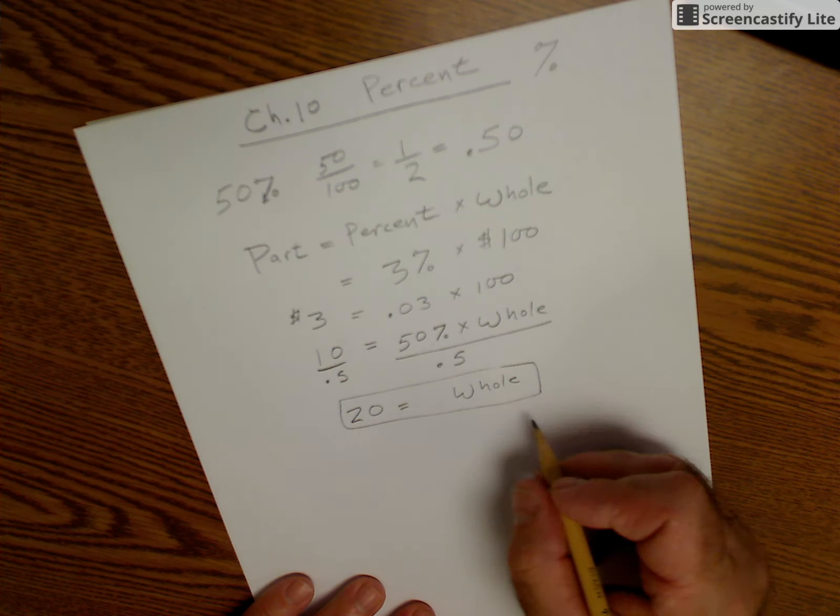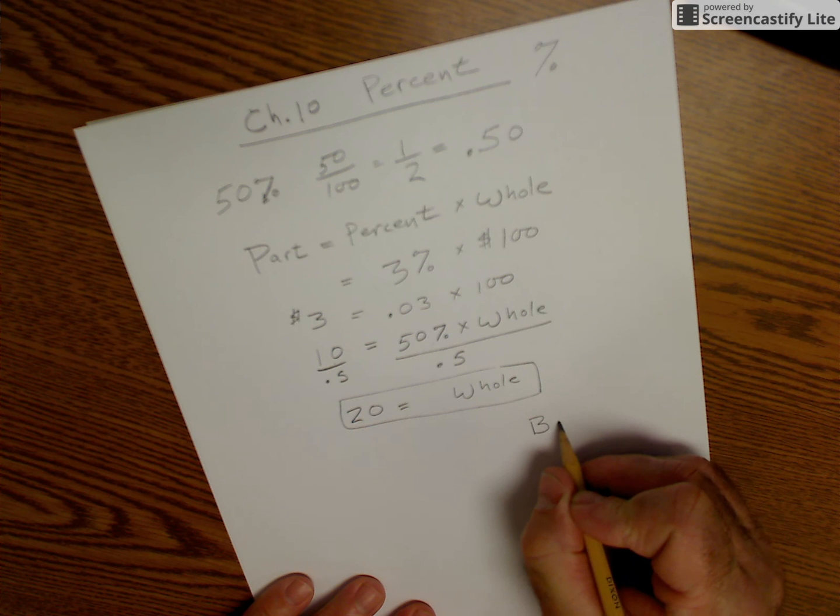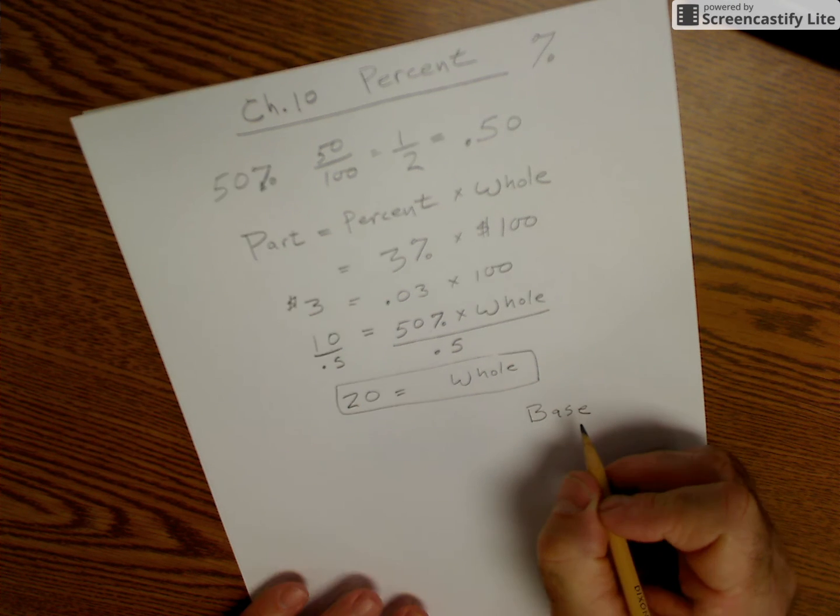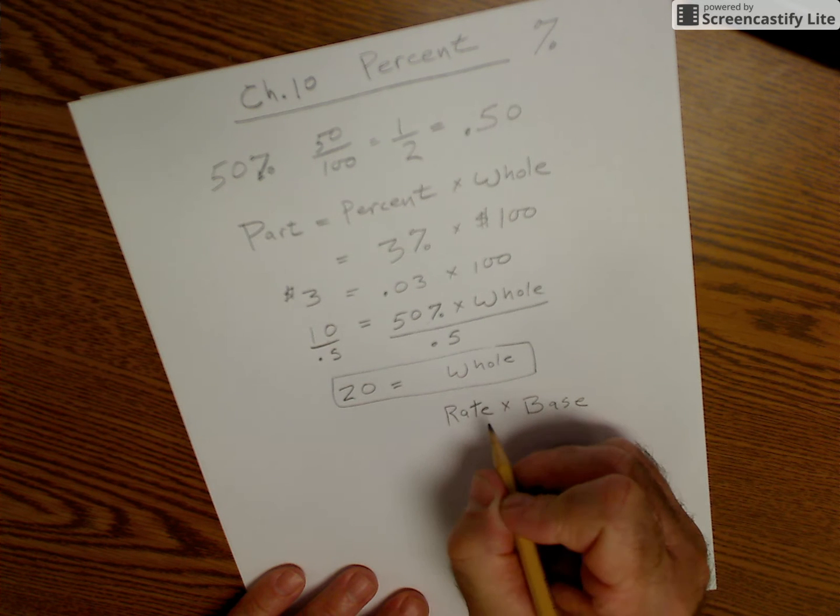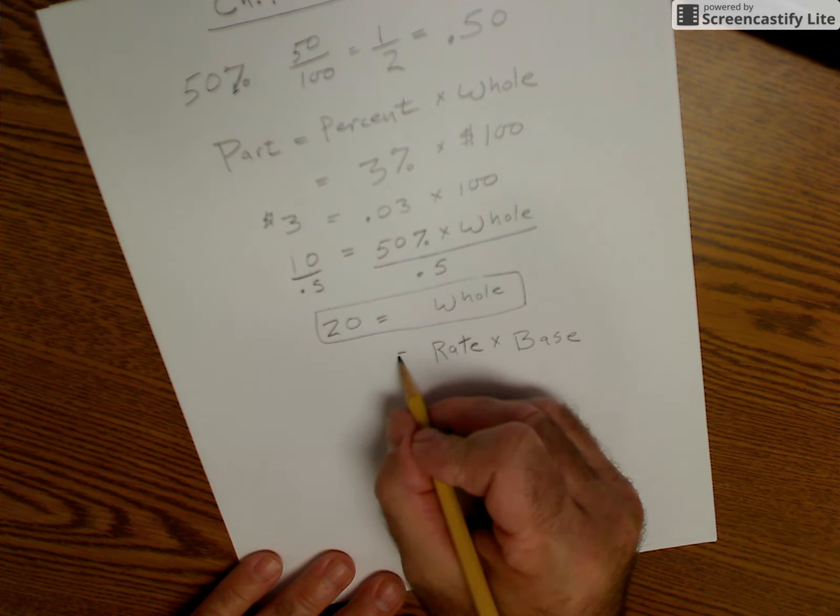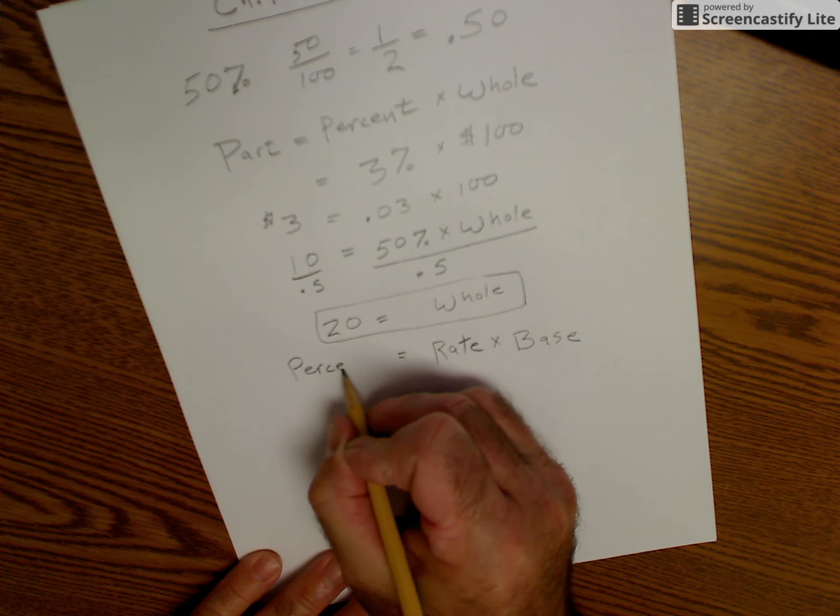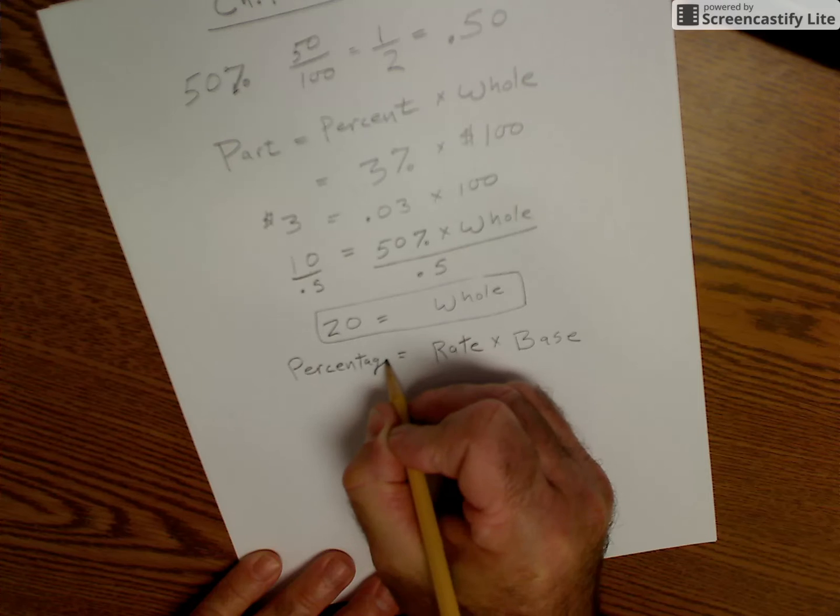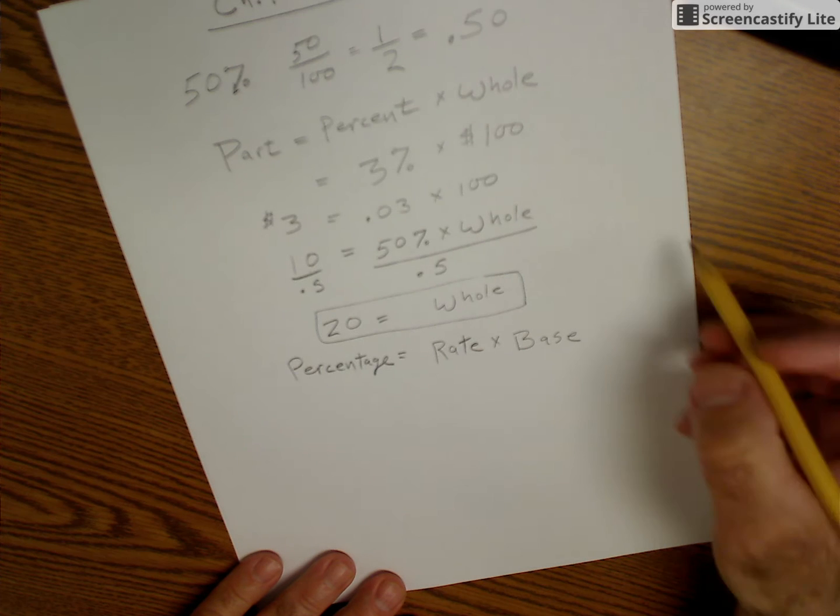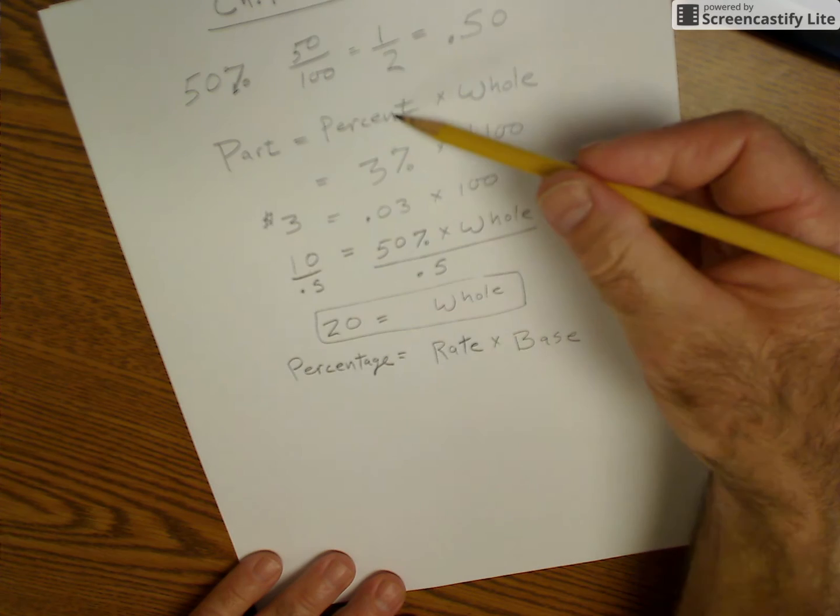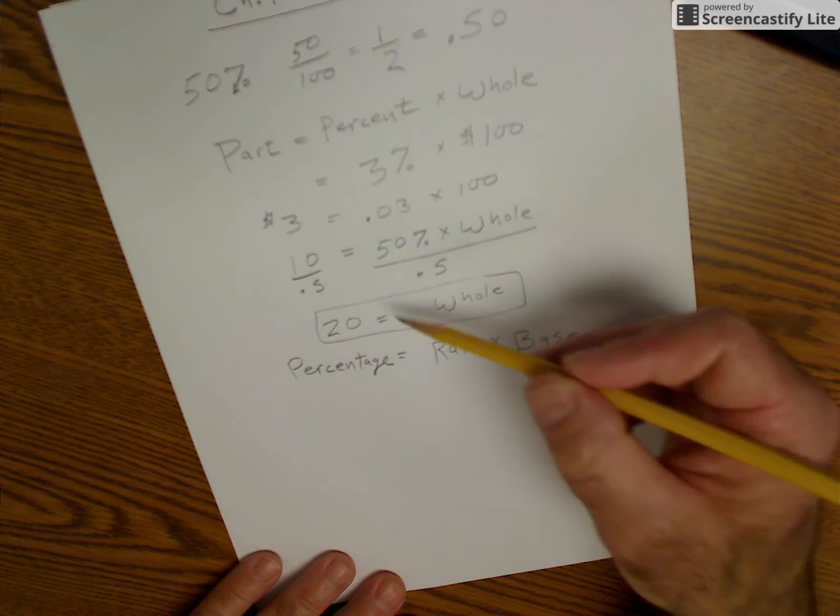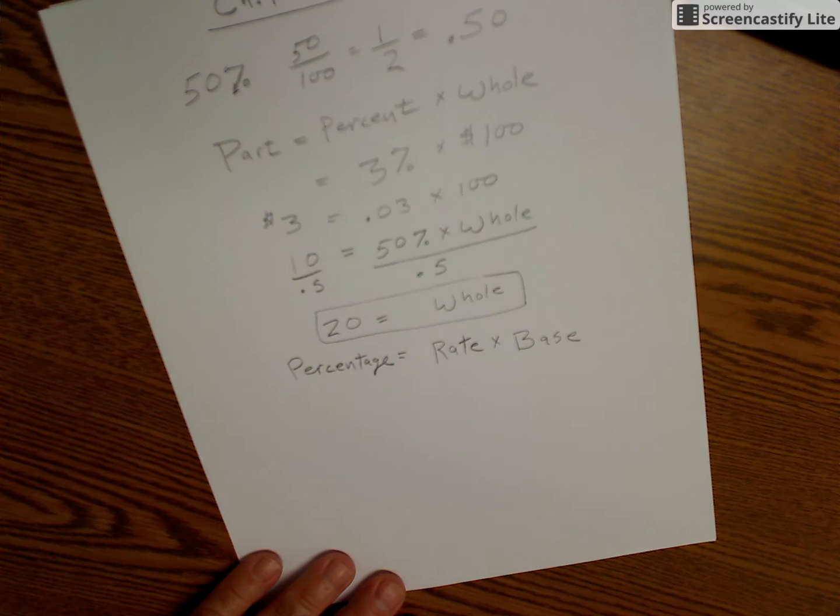The whole is also called the base. The percent is called the rate. And the part is called the percentage. So it's really the same equation here. Another term for the whole is the base. The percent is the rate. And then the percentage is the part that you're getting.